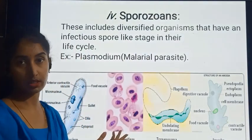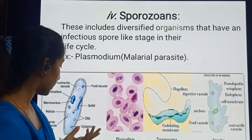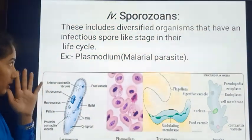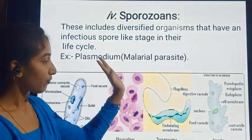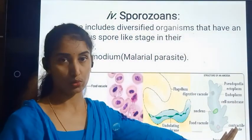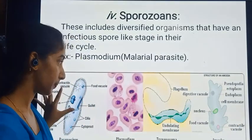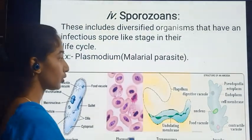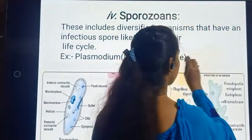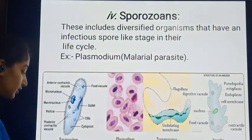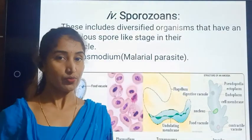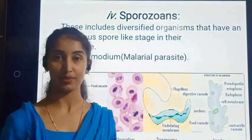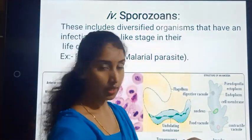As discussed in the previous slides, we saw examples of ciliated, sporozoan, flagellated, and amoeboid protozoan. Now we shall see pictures and diagrams. The first one is amoeboid protozoan — here is a picture of Amoeba, which is not new to us since we have been learning about this single-celled organism from lower classes.